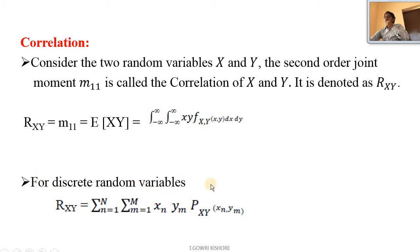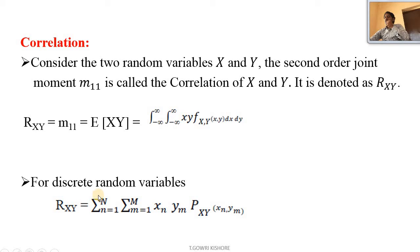For discrete random variables, R(x,y) equal to summation n equal to 1 to N, summation m equal to 1 to M, of x_n · y_m into p(x_n, y_m). This represents the correlation for discrete random variables.